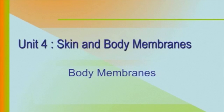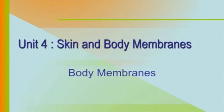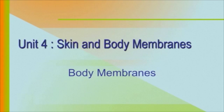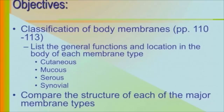All right class, today we are covering skin and body membranes. This is chapter four in the Marieb Introduction to Human Anatomy textbook. The first four or so pages will focus on body membranes — they're not part of any one specific system, they're actually found throughout all the systems, but covered here because they function in protection and covering much like the integumentary system. This is found on pages 110 to 113 in your textbook.